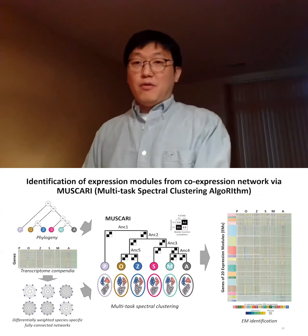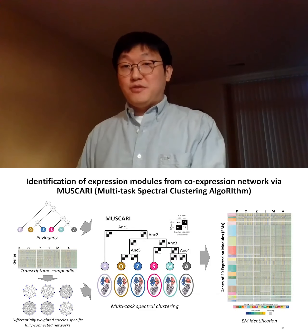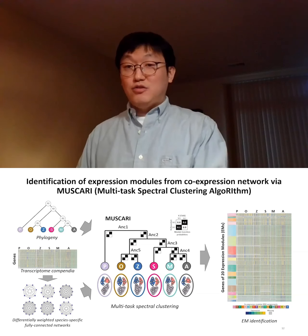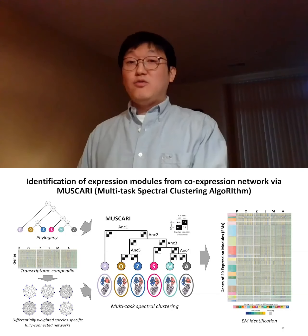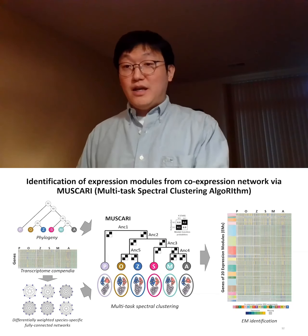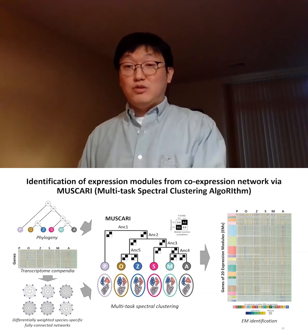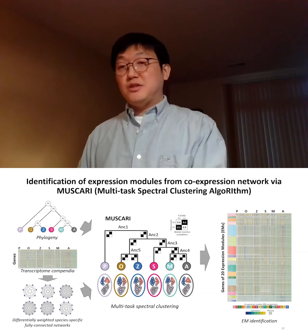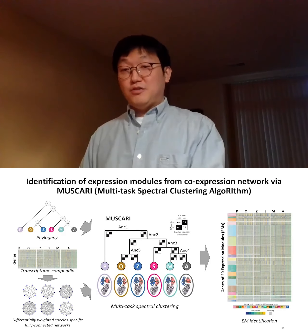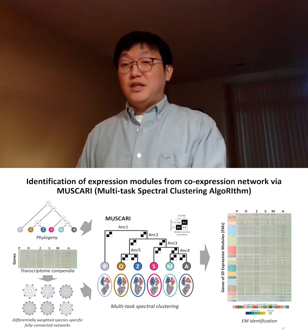To expand the scope of our clade-specific gene set analysis to more molecular processes, we decided to infer gene expression modules or subnetworks, which are often associated with specific molecular pathways and offer a robust basis to interpret the gene sets identified using our protein data. To define expression modules jointly across six species, we developed a multi-task graph clustering algorithm named Muscari. Muscari uses the phylogenetic relationship and species-specific co-expression graphs as input to learn matched subnetworks across the six species. Using Muscari on our six plant transcriptome compendium data, we identified 20 different expression modules.